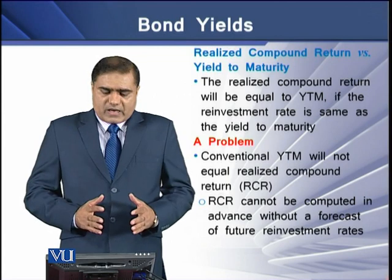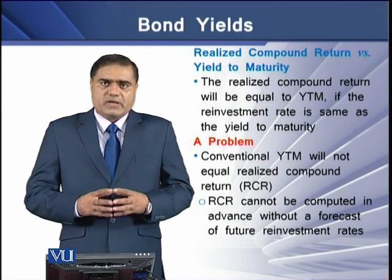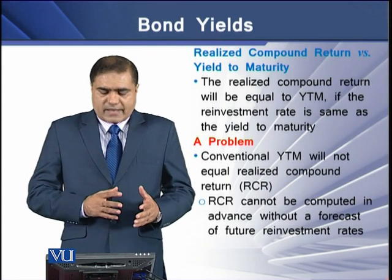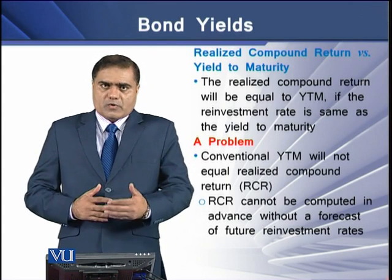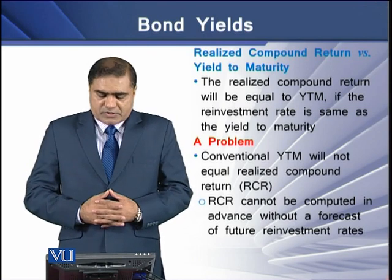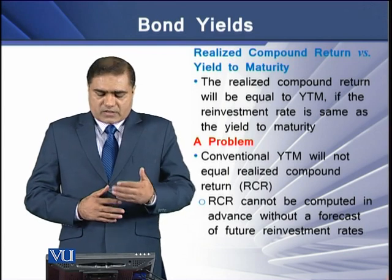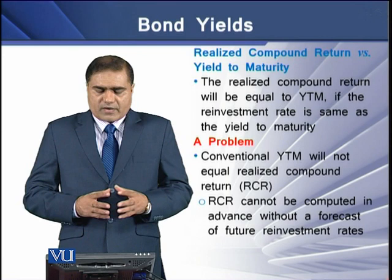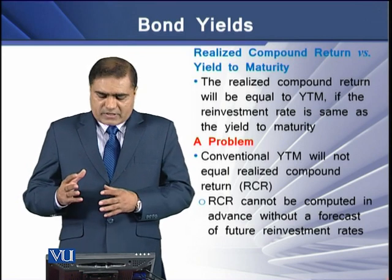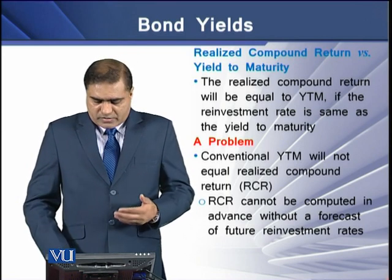The realized compound return will equal YTM if the reinvestment rate is the same as the yield to maturity. However, the conventional yield to maturity will not equal the realized compound return if the reinvestment rate differs, because the realized compound return cannot be computed in advance without a forecast of future interest or reinvestment rates.